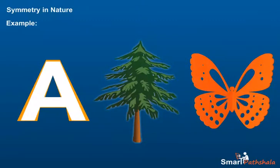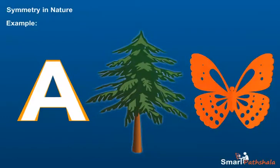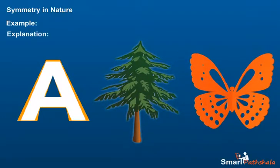Example: Identify if the following figures are symmetrical or not. Figure 1, Figure 2, Figure 3. Explanation 1: We try to find the line of symmetry in the figure. Here we see that the dotted line acts as the line of symmetry. Since the line divides the shape into congruent parts, they are symmetrical in nature.